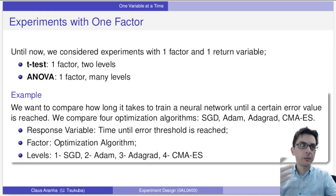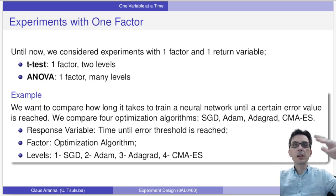Just to give another example, let's say we want to compare how long it takes to train a neural network until a certain error value is reached. We compare four optimization algorithms: SGD, Adam, Adagrad, and CMA-ES. Our response variable is the time until the error threshold is reached. The factor is the optimization algorithm. The levels are SGD level one, Adam level two, Adagrad level three, and CMA-ES level four. Notice how I can easily break down the experiment into response variable, factor, and levels.